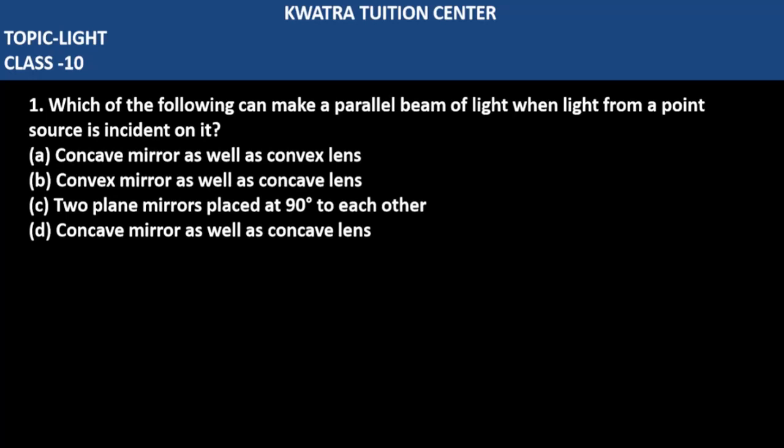Question number one says which of the following can make a parallel beam of light when light from a point source is incident on it? We have a point source and we are incident on which? The mirror and lenses, we have given options. So let's tell us in which case we can get a parallel beam of light as an emergent ray.